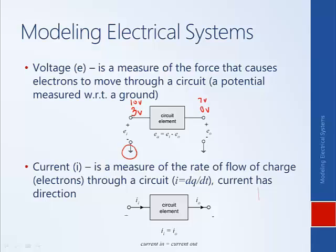Another important quantity that we need to understand is current. Current, which we will represent with the letter I, is a measure of the rate of flow of charge through a circuit, the rate of flow of electrons. We can think of this just like a mechanical system. You can think of the electrons flowing through the circuit like water flowing through a pipe.